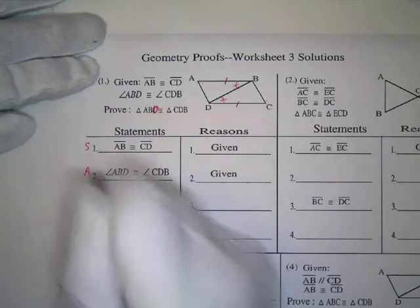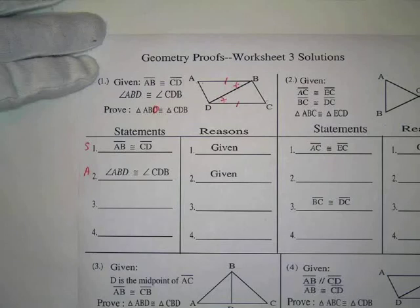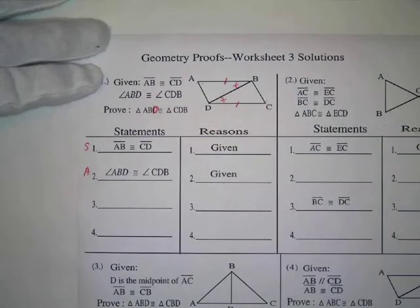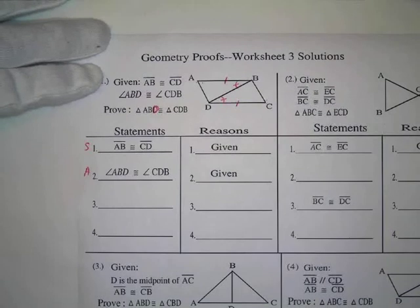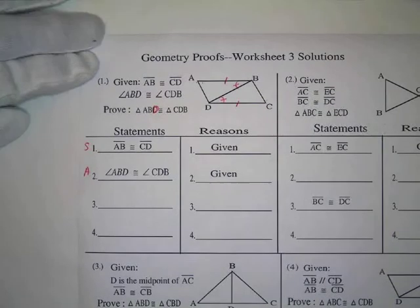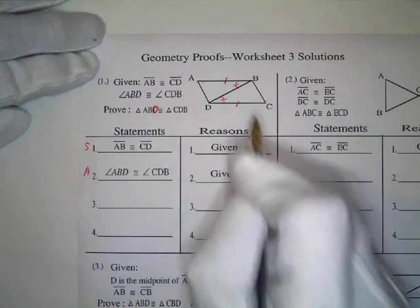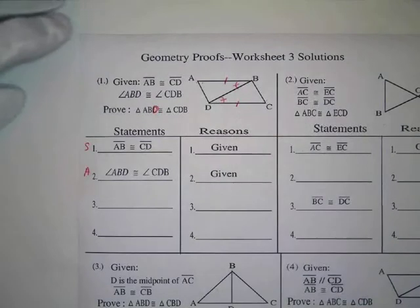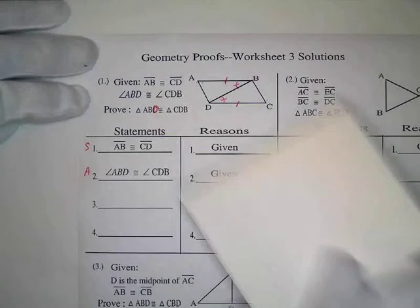We have side angle. We have two ways to do this: side-side-side or side-angle-side. Right now I think we see that we have DB in both triangles. We've seen this before.